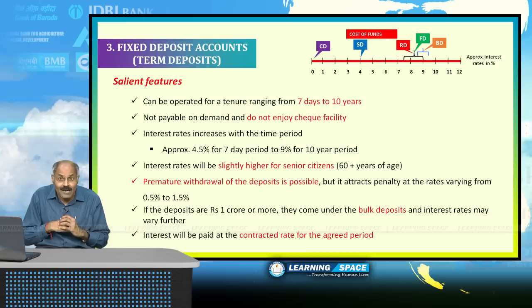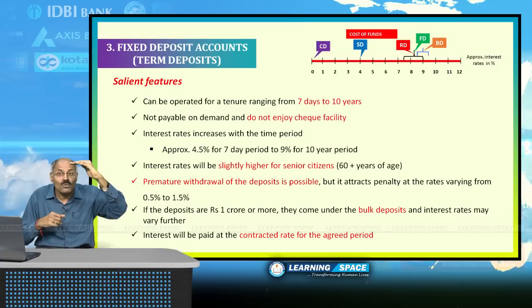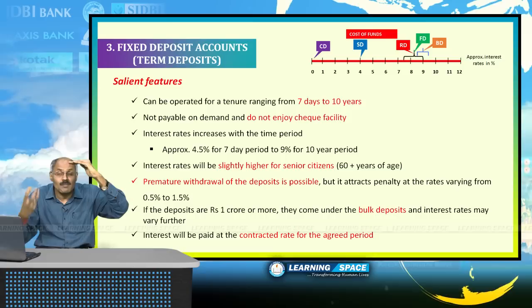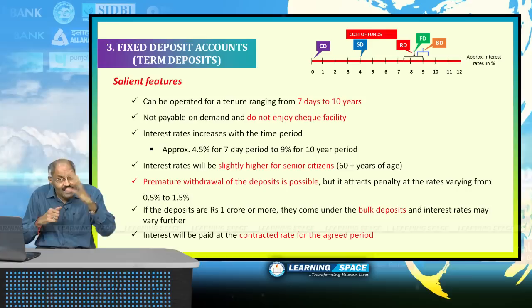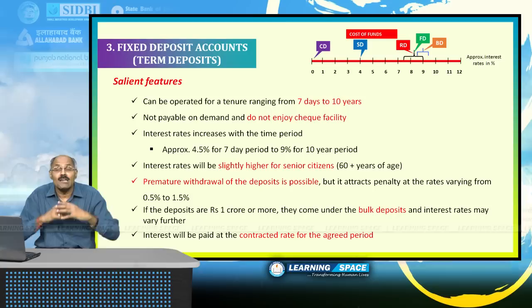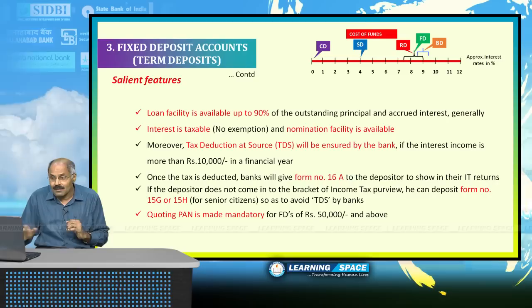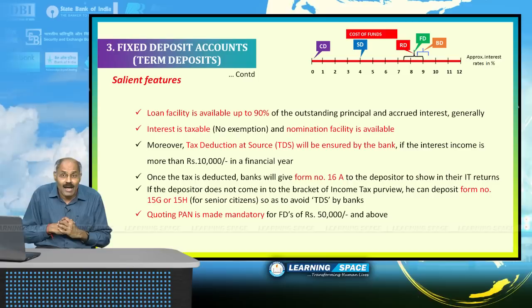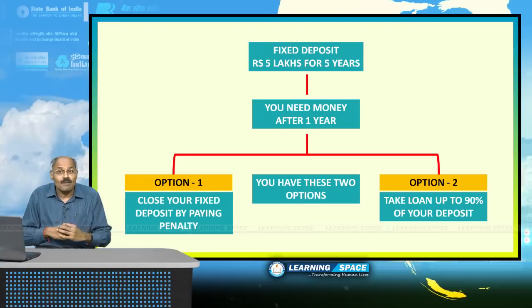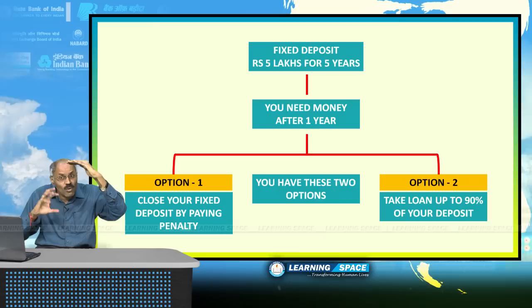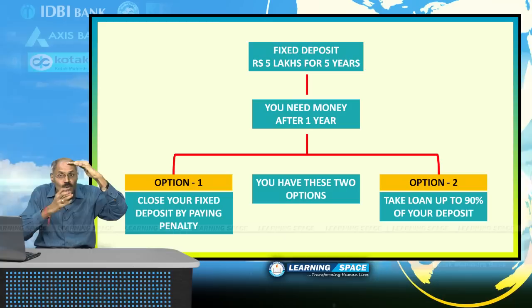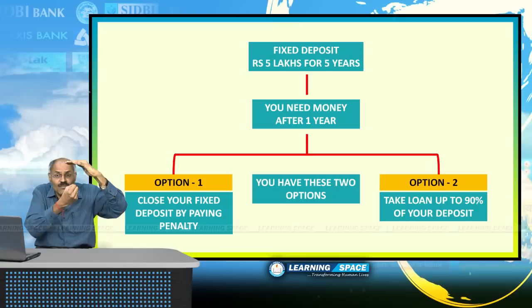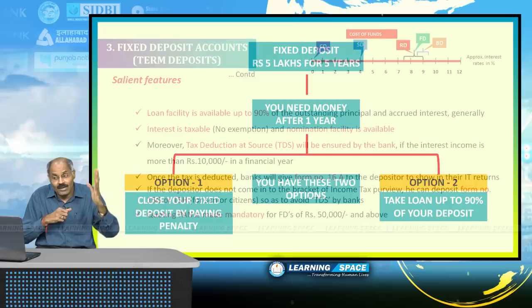You can take money back prior to the agreed period in case of an emergency. For example, if you deposited for 3 years but need money after 1 year, you can withdraw early, but the bank will impose a penalty. Another important option is that a loan facility is available up to 90% of your principal plus interest. So if you deposited 5 lakh rupees for 5 years, you have two options: close the deposit and pay the penalty, or take a loan against it — banks will give up to 90%.